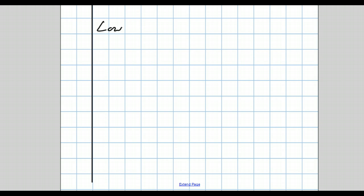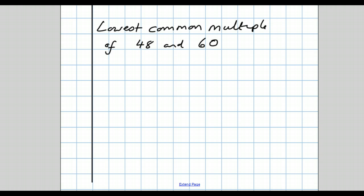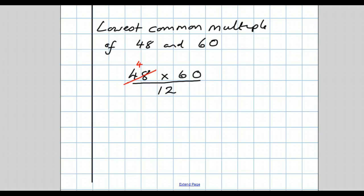How do we use that to find the lowest common multiple? The lowest common multiple of 48 and 60. Here's the simplest way: multiply them together and divide by the highest common factor you just worked out. Let's do the cancelling first. 12 goes into both 48 and 60 — obviously, it's a common factor. I'm going to divide it into 48: divide that by 12 to give me 4, and 12 into itself to give me 1. Now I multiply what I have left: 4 times 60 is 240. So the lowest common multiple of 48 and 60 is 240.